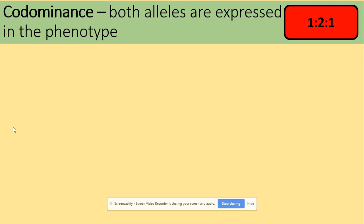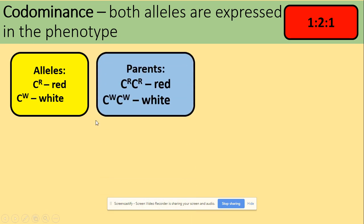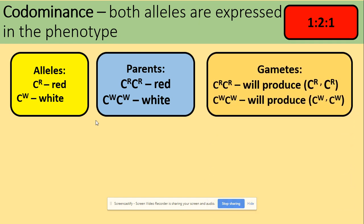Codominance is the situation where both alleles will be expressed in the phenotype. We write them down with the capital C, and then our alleles that stand for the characteristic are written down as superscripts. So that's the allele for red and the allele for white — those are our parents that we will be crossing: a red and a white individual. The gametes they produce are similar to the monohybrid cross since we're only looking at one characteristic, so we chop it in half — remember gametes are haploid.